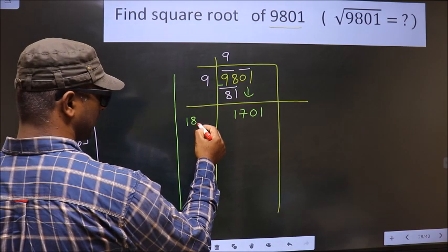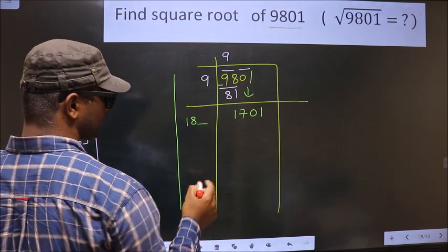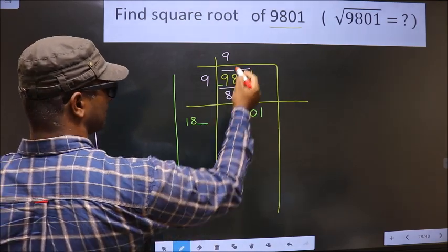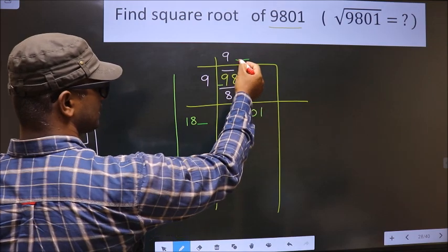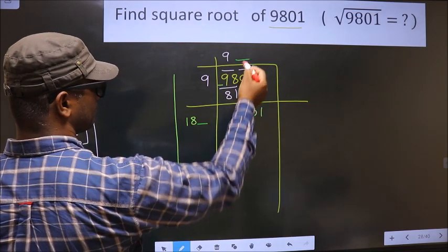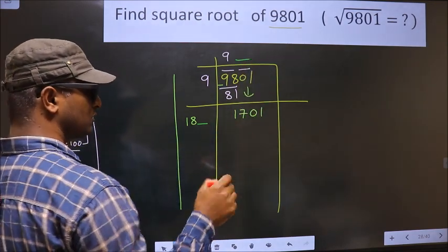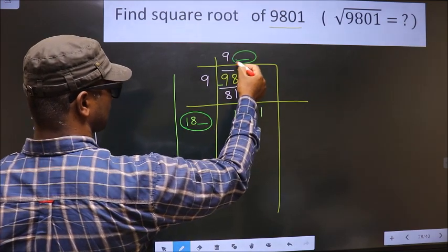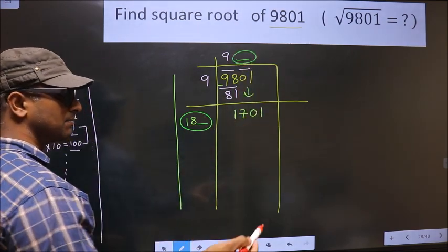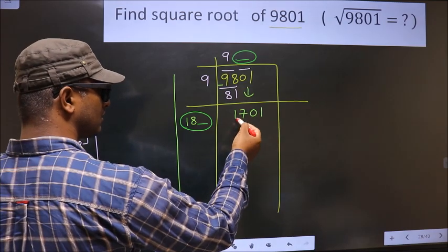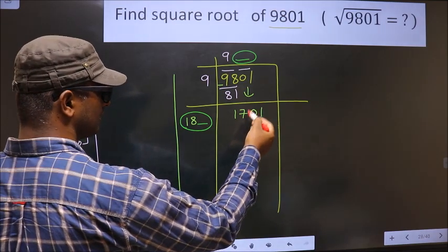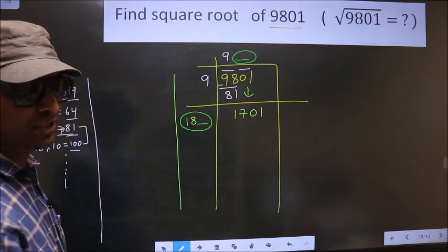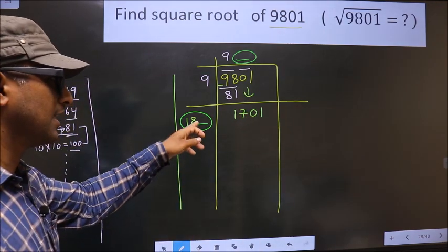Now we should write a number here. The condition is whatever number we write here, here also we should write the same number. And also when you multiply this number and this number, you should get a number equal to this or smaller than this, but not exceeding this. Okay, so let us find the number here.